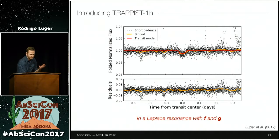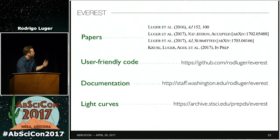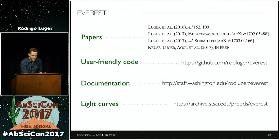We have fuel left on the spacecraft, so we should continue to use it. The EVEREST pipeline is open source — you can check it out on GitHub or pip install it if you use Python. We are going to continue detrending all the K2 campaigns as long as the spacecraft has fuel, so keep an eye out for our paper with the new habitable zone planets.